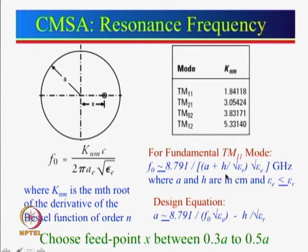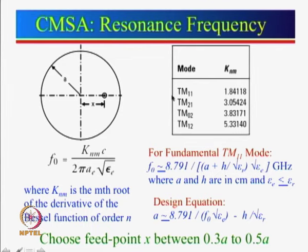This is very similar to what was done for the rectangular patch, where Leff = L + 2ΔL. Here we take Ae = A + ΔA all around. ΔA ≈ h / √εr, and εeff should be less than εr. A and h are taken in centimeters. That is how the numerical constants arise.